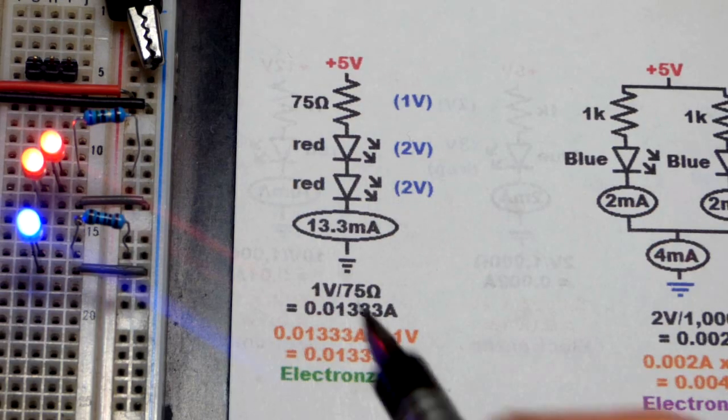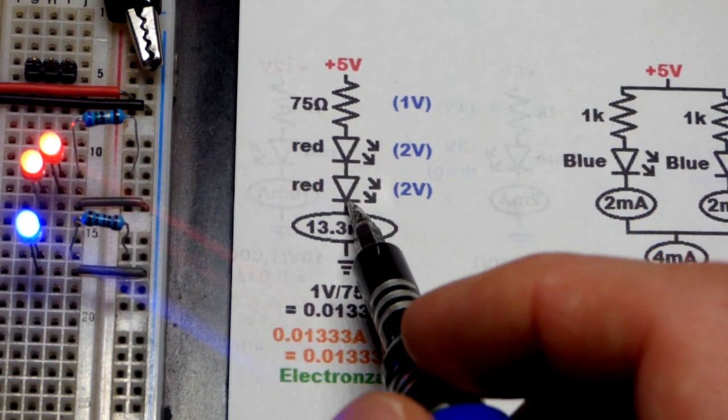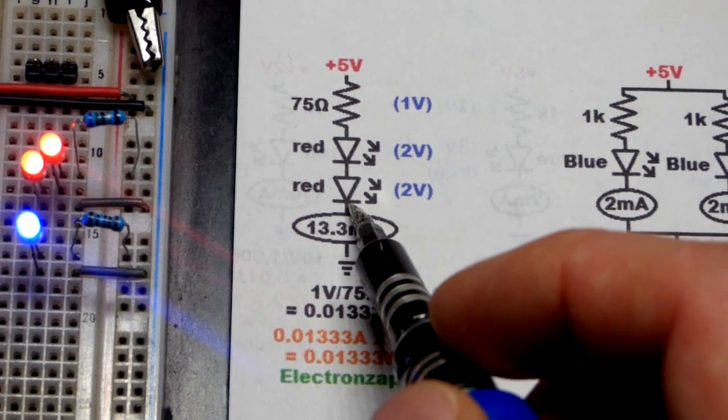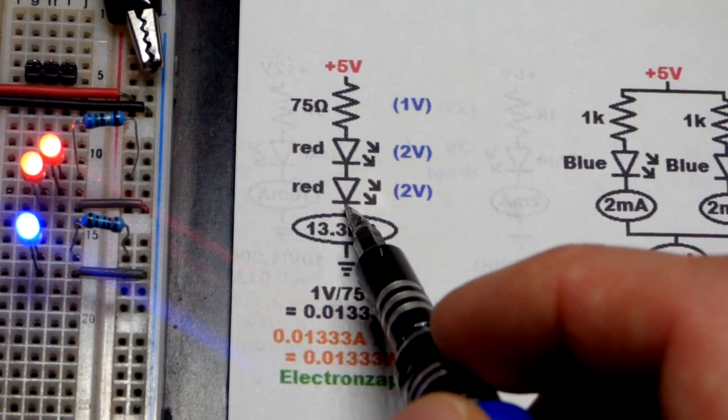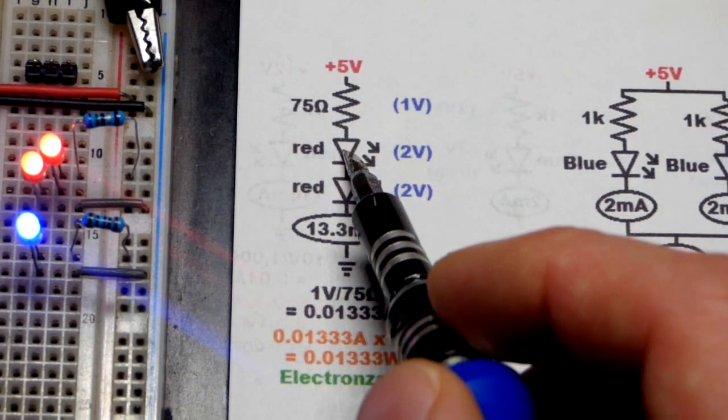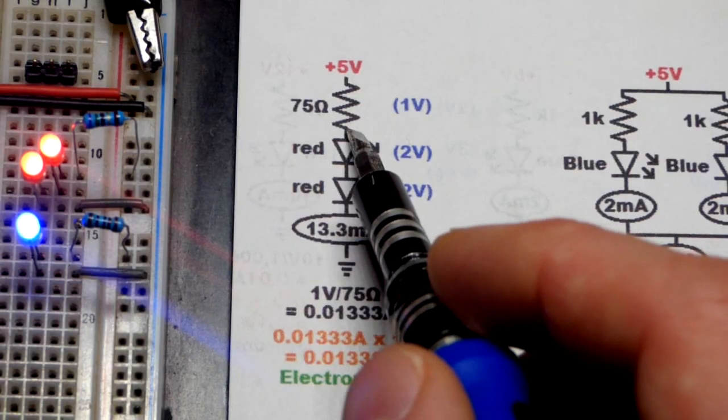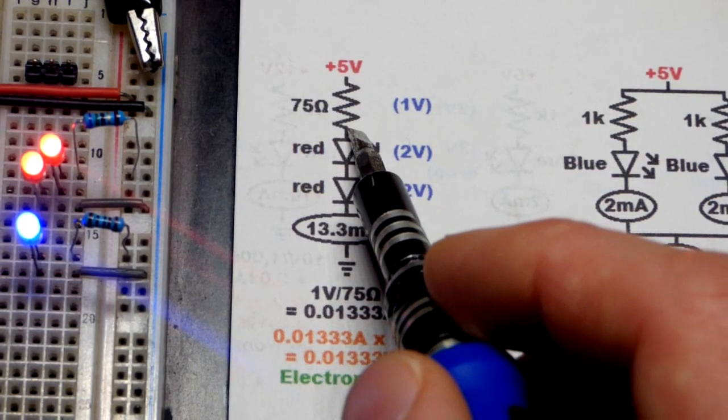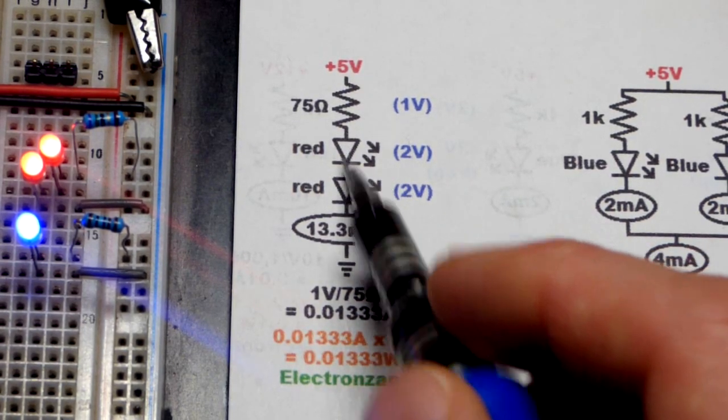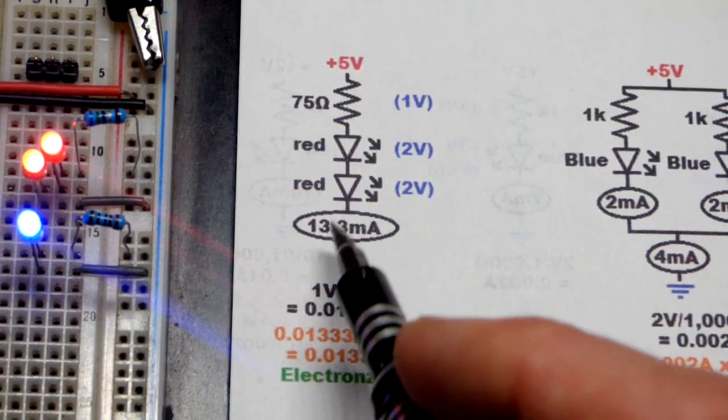So now we're going to look at two red LEDs again. They're in series, and one reason you may want to do this is you want twice the light when you got 5 volts right there. Also, we're wasting less power—there's less waste heat across the resistor because we're dropping more voltage with the two red LEDs right there to get that light.